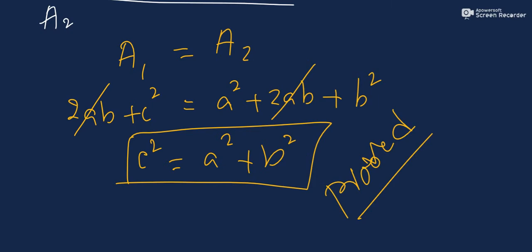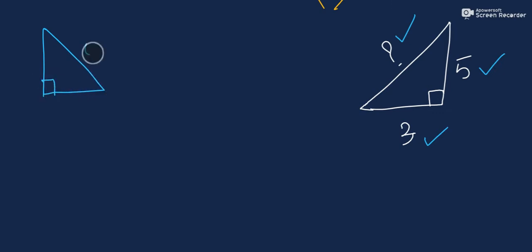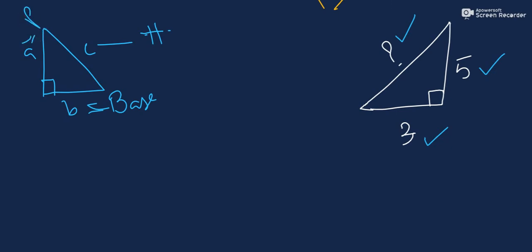Now we will do one example using this theorem. I have a right triangle where one leg is equal to 5 and the other leg is equal to 3, and we have to find the hypotenuse. In the triangle, C is the hypotenuse, B is the base, and A is the perpendicular.